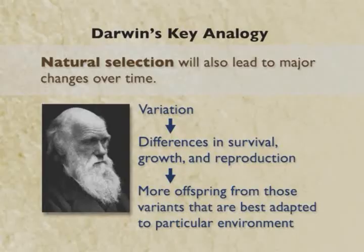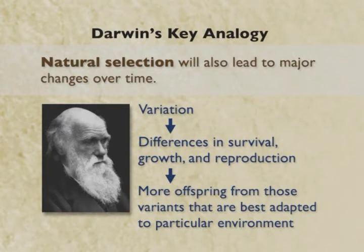Darwin and Wallace realized that a very similar process would happen in nature. Wild plants and animals vary in all sorts of random ways, but many more are produced than can possibly reproduce or survive. So inevitably, more offspring will be generated from those random variants that are best adapted to particular environments. As Sean emphasized, environmental conditions on the earth change all the time, and so animals are constantly being selected — those that do the best in changing environmental conditions. Darwin and Wallace proposed that this would produce major changes in nature, just as humans had done in artificial selection.